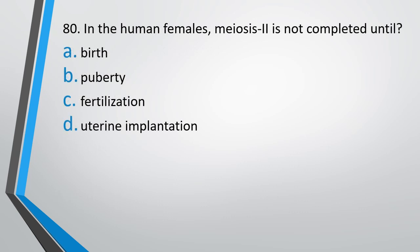Question number 80. In human females, meiosis 2 is not completed until: birth, puberty, fertilization, or uterine implantation? The correct answer is Option C - it is not completed until fertilization.